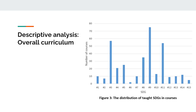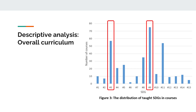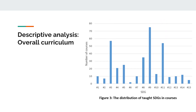Here is the distribution of taught SDGs in courses across the overall Common Core curriculum through the classification. Among courses, SDG 3 – Good Health and Wellbeing, SDG 9 – Industry, Innovation and Infrastructure, and SDG 11 – Sustainable Cities and Communities are the most mentioned SDGs. This distribution is expected since teachers aim to teach topics that address up-to-date issues in societies and personal growth.